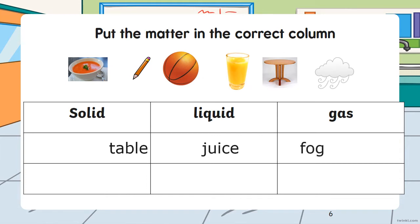The fog up in the sky with the clouds — that's gas. Now back to solid: the pencil is solid. And liquid? The soup is liquid. What about gas? The air inside the bowl will be gas.